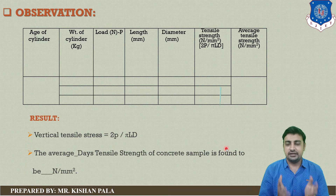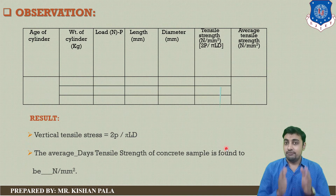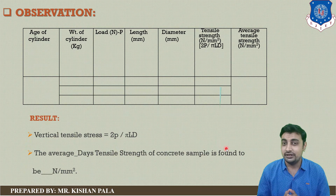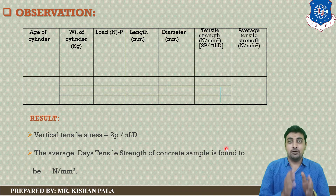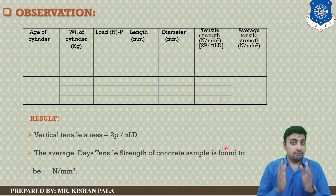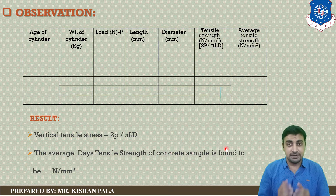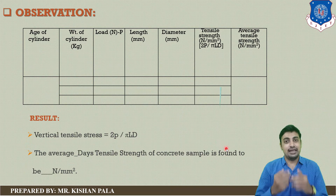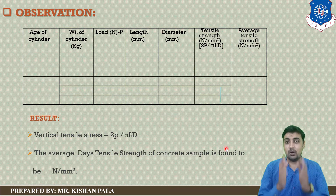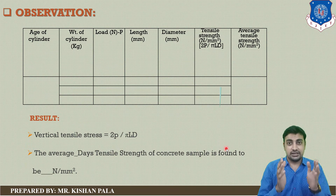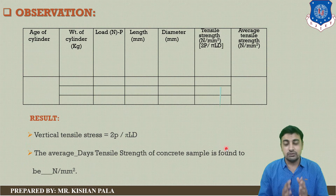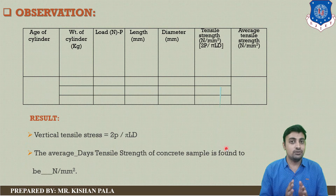The split tensile test is used for finding the tensile strength of the concrete mass. With this test, we can get more accurate results of the tensile strength of the concrete mass compared to other tests like the modulus of fracture test. We also use the same cylindrical specimen of 150 mm diameter and 300 mm height to calculate both tensile strength and compressive strength of the concrete mass.